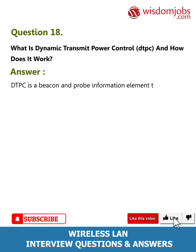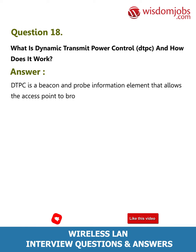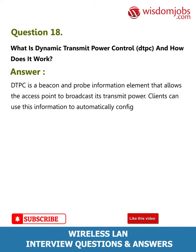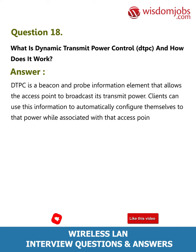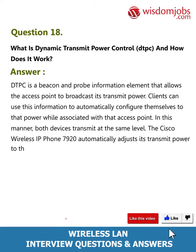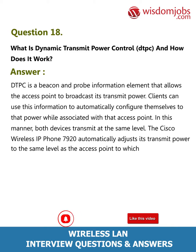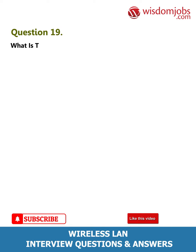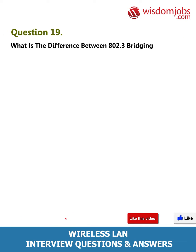Question 18: What is Dynamic Transmit Power Control (DTPC) and how does it work? Answer: DTPC is a beacon and probe information element that allows the access point to broadcast its transmit power. Clients can use this information to automatically configure themselves to that power level while associated with that access point. In this manner, both devices transmit at the same level. The Cisco Wireless IP Phone 7920 automatically adjusts its transmit power to the same level as the access point to which it is associated.